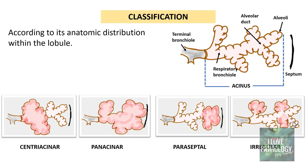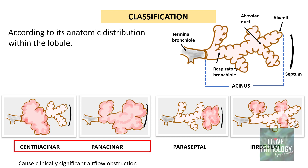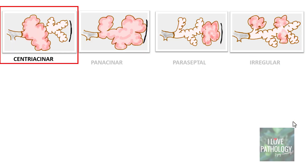So these are the four categories of emphysema: centriacinar, panacinar, paraseptal, and irregular emphysema. Of these four, only centriacinar and panacinar emphysema cause clinically significant airflow obstruction.